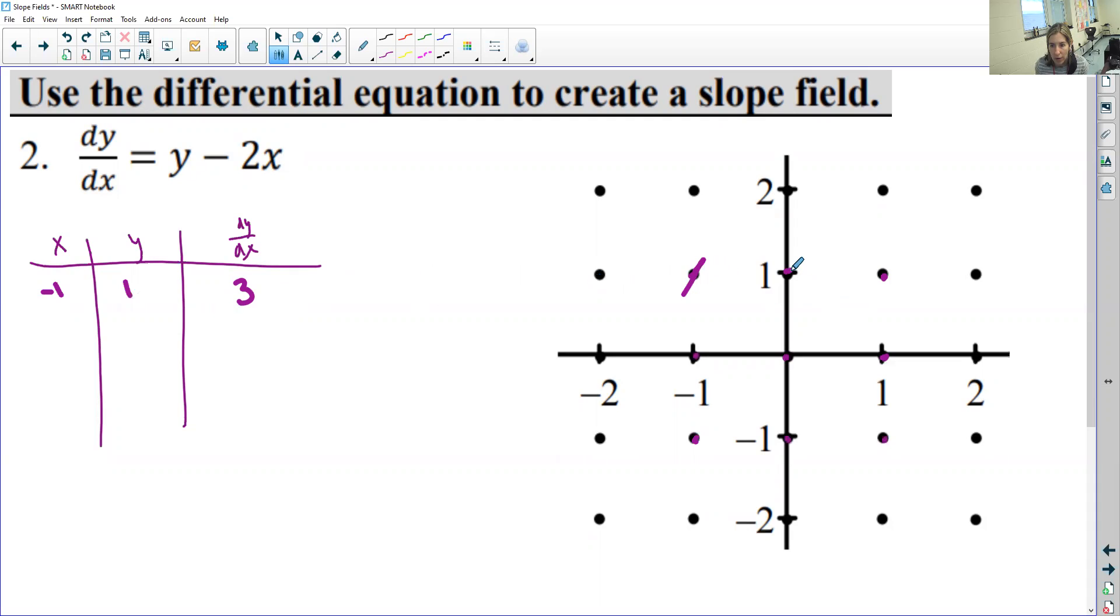I'm trying to make it a little bit steep. Alright, so now this is the point 0, 1. So to plug that in, you're going to end up with 1, so the slope will look like that.